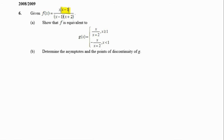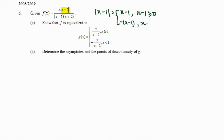We have a modulus function here, so the first step is we need to express modulus(x minus 1) as a piecewise function. It will be positive (x minus 1) when (x minus 1) is greater than or equal to 0, and negative (x minus 1) when it is less than 0. Therefore, simplifying this modulus function, we will have (x minus 1) when x is greater than or equal to 1, and negative(x minus 1) when x is less than 1.